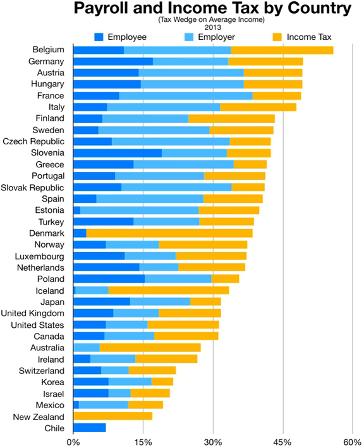Income taxes of workers are often collected by employers under a withholding or pay-as-you-earn tax system. Such collections are not necessarily final amounts of tax, as the worker may be required to aggregate wage income with other income and or deductions to determine actual tax. Calculation of the tax to be withheld may be done by the government or by employers based on withholding allowances or formulas. Retirement-oriented taxes, such as Social Security or National Insurance, also are a type of income tax, though not generally referred to as such. These taxes generally are imposed at a fixed rate on wages or self-employment earnings up to a maximum amount per year. The tax may be imposed on the employer, the employee, or both, at the same or different rates.